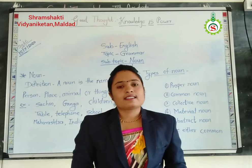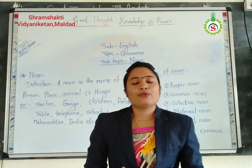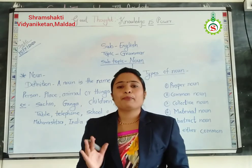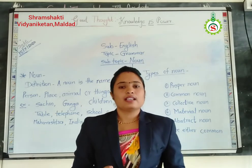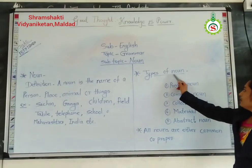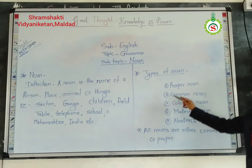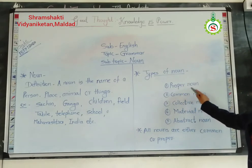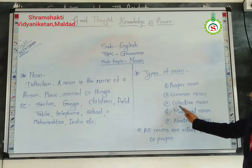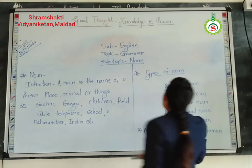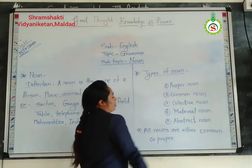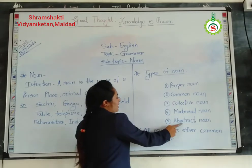Now, next — what are the types of a noun? There are five main types of a noun. See on the whiteboard. First: Proper noun. Second: Common noun. Third: Collective noun. Fourth: Material noun. Fifth: Abstract noun.